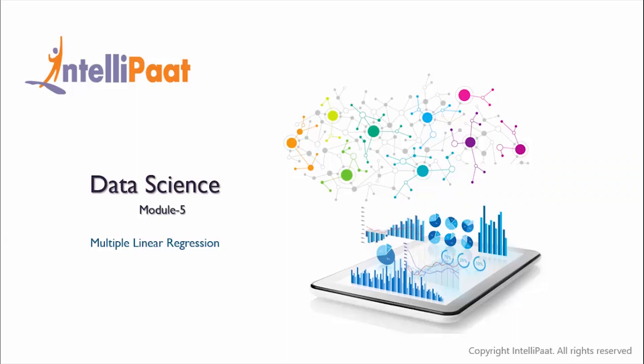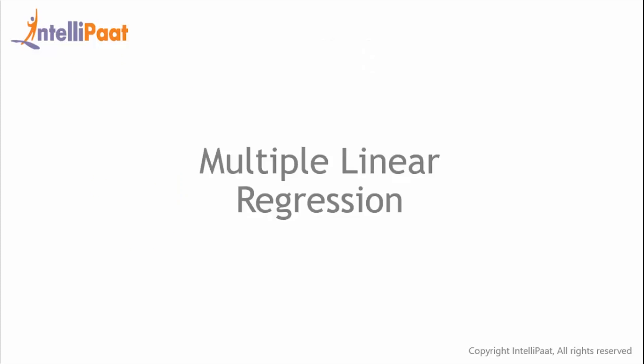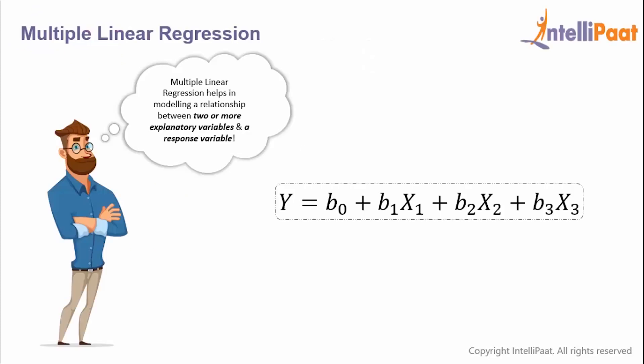Welcome back to the data science course. In today's session we learn and implement multiple linear regression. In multiple linear regression we have more than one independent variable, and we try to determine how all of these independent variables together affect the dependent variable — for example, a mapping between y, x1, x2, and x3, where y is the dependent variable and x1, x2, and x3 are the independent variables.